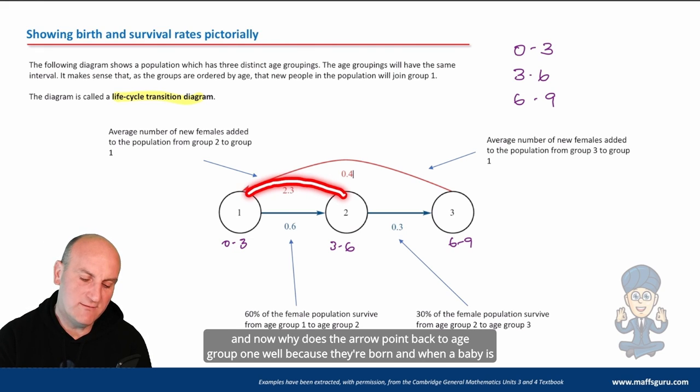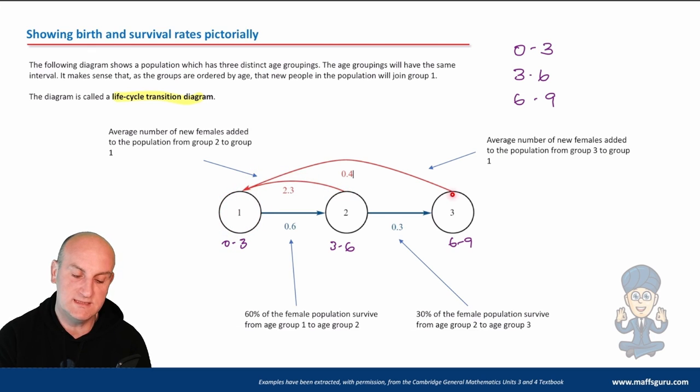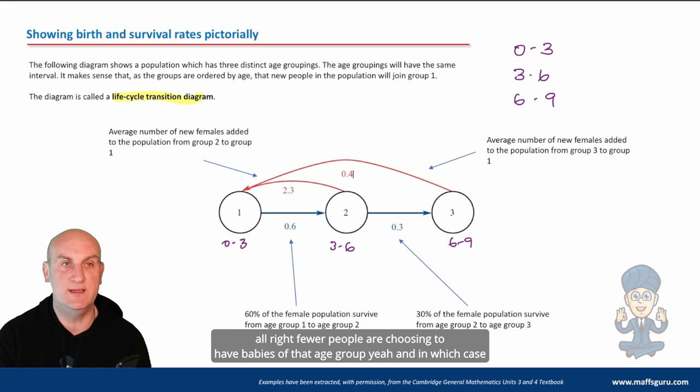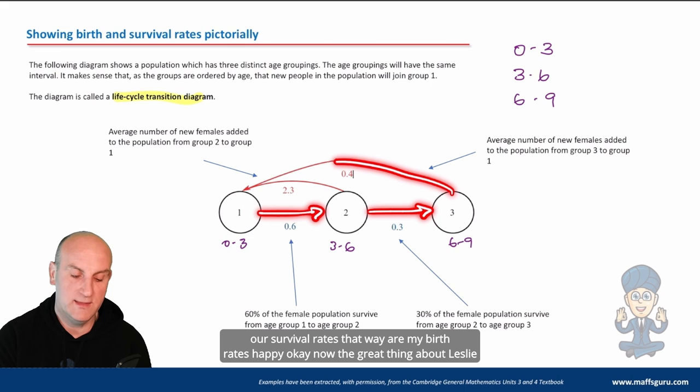And now why does the arrow point back to age group one? Well, because they're born. And when a baby is born, how old is it? It's zero. So these babies are going to join back into group one. Likewise here, 0.4. This age group here, still able to have children, but actually fewer of them. Fewer people are choosing to have babies at that age group. And in which case, for every female, they create 0.4 of a baby. So there's my diagram. Going that way are survival rates, that way are my birth rates.